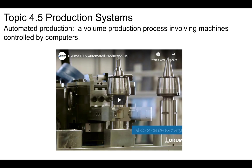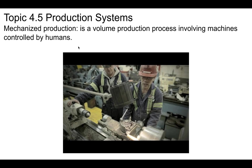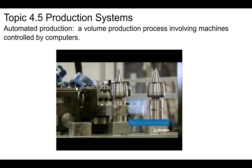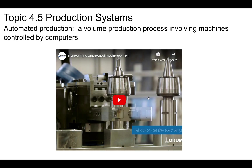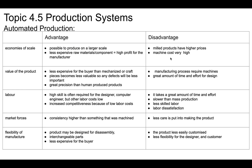We get to automated production. This is a volume production process involving machines controlled by computers. So instead of having people control the machines like you do in a machine shop, you now have computers controlling it. You can watch this process — it's showing you essentially some of the skills you saw the machinist doing in the previous video, but instead of a machinist, a computer is doing this.